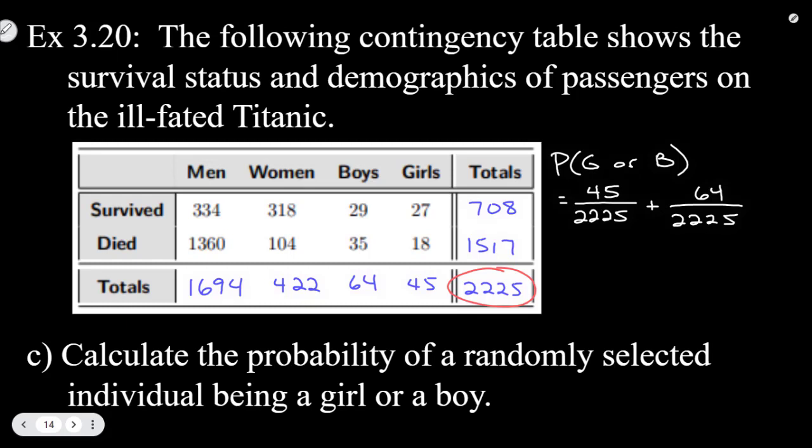And if you were going to try to use your more general formula, you'd have 0 over 2225 because there are no girls and boys. There are no people who could be chosen who are girls and boys. So then we add this together. We're going to get 109 over 2225.